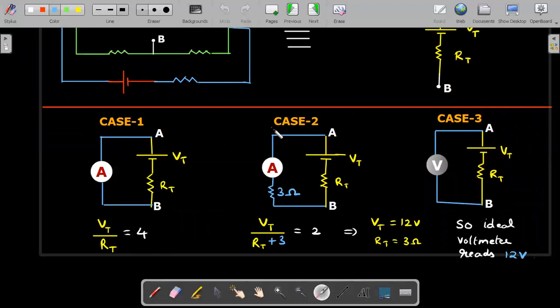In the first case, the reading is nothing but VT divided by RT. This is also known as short circuit current because the resistance of this ammeter is almost negligible. So this is a short circuit current, which he gave us 4 ampere. And the second case, you have a normal loop of current. So VT drives both RT and 3 in series. So solving these two equations, you can directly get the value of VT and RT. That's the advantage of Thevenin's equivalent.